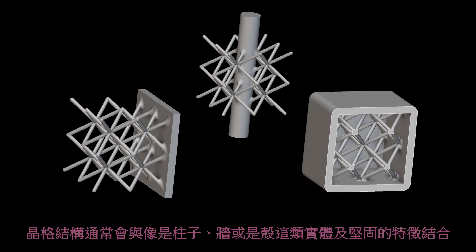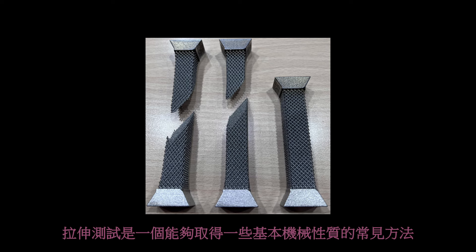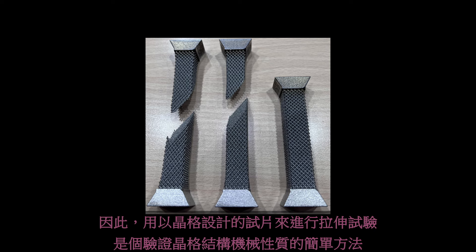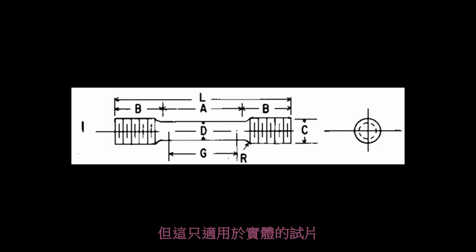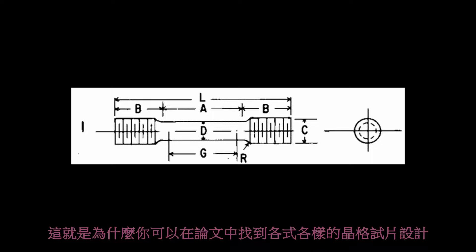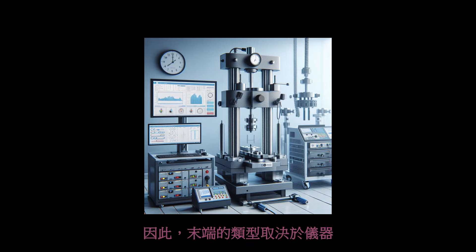Lattice structures are usually connected with solid and strong features like beams, walls, or shells. This controls the exact areas for lightweighting or strengthening to connect with functional exteriors. Tensile testing is a common method to obtain basic mechanical properties. Therefore, doing tensile tests with lattice design specimens is a simple way to verify the mechanical properties of lattice structures. There are standards for metal tensile testing like ASTM E8, but it is for solid specimens. Nevertheless, there are currently no standards for lattice specimens, which is why you can find various lattice specimen designs in papers. Due to different fixtures in the testing machine, the design of the specimen ends is also different, so the type of end depends on the machine.